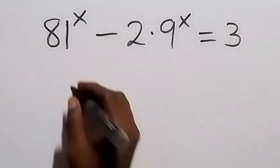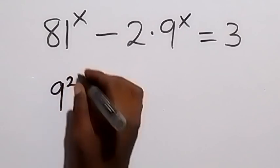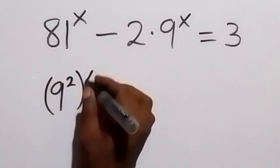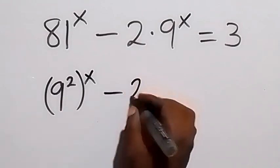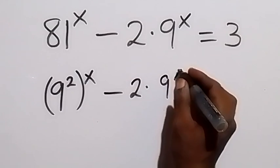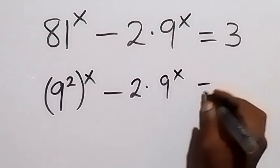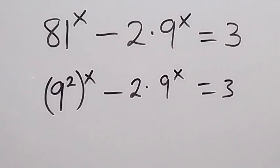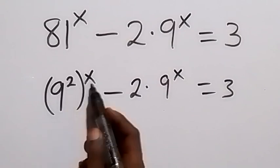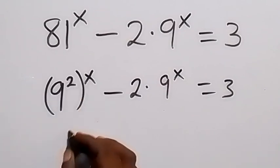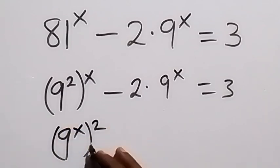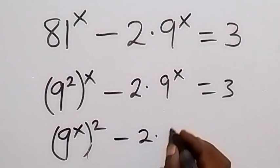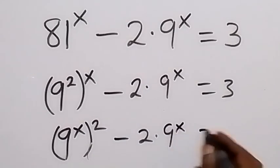From here, we can write this as 9 squared raised to power x. 81 can be written as 9 squared, that's 9 times 9, then minus 2 times 9 raised to power x, equals to 3. And from the law of indices, we can rewrite what we have here. This power can be interchanged, and this will become 9 raised to power x, then raised to power 2, minus 2 times 9 raised to power x equals to 3.